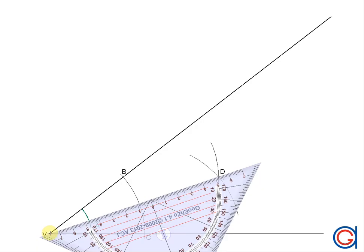And now finally, we will join points V and D to obtain the angular bisector, which is the line that divides angle A into two equal angles.